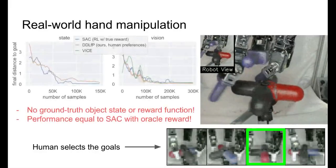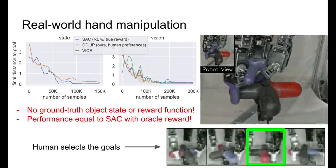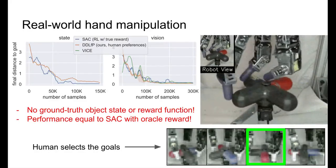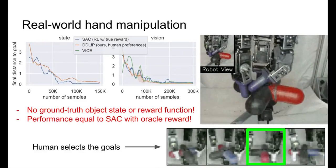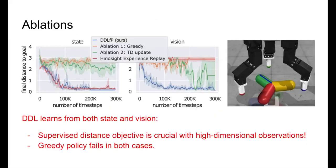Both the vision and state-based variants use only 10 human queries and take about 8 hours to converge. The learning curves show that DDL performs on par with both soft actor critic that has access to the oracle reward, and VICE, which is a related method for training goal-reaching policies.